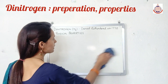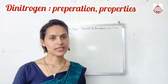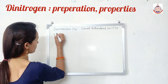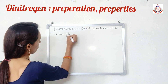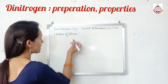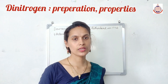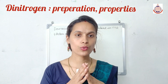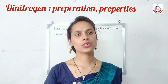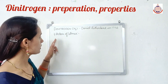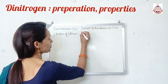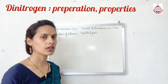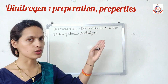Now we will study the chemical properties of dinitrogen. First, action on litmus: nitrogen does not show any reaction with litmus because nitrogen is a neutral gas. On the basis of the action on litmus, we know that nitrogen is a neutral gas.